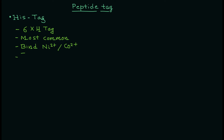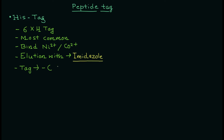It works by the ability of the histidine amino acid to bind specifically to nickel ions or cobalt ions. Once you have these ions immobilized on the resin, you can flow your protein mixture through and it will bind to the resin. Then, using an eluting agent like imidazole or low pH, you can dissociate the interaction and purify your protein from the mixture.